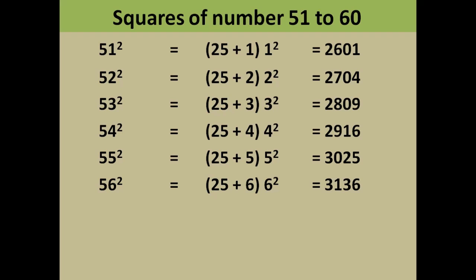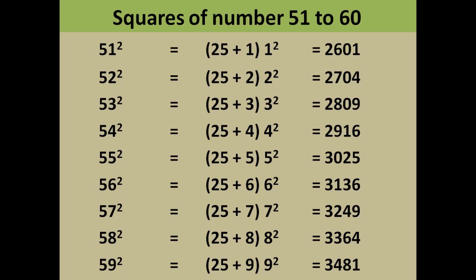In each and every case what you have to do is you have to add 25 with the unit number and square the unit digit, and you will get the square of that number. This is basically applicable for the numbers starting from 51 to 59.